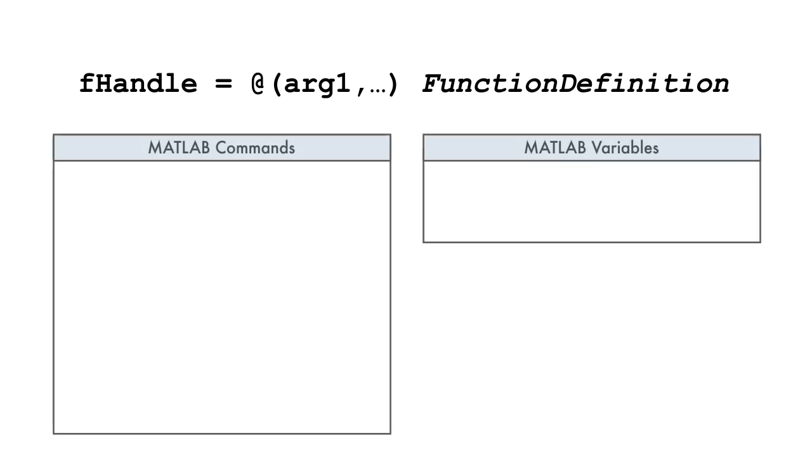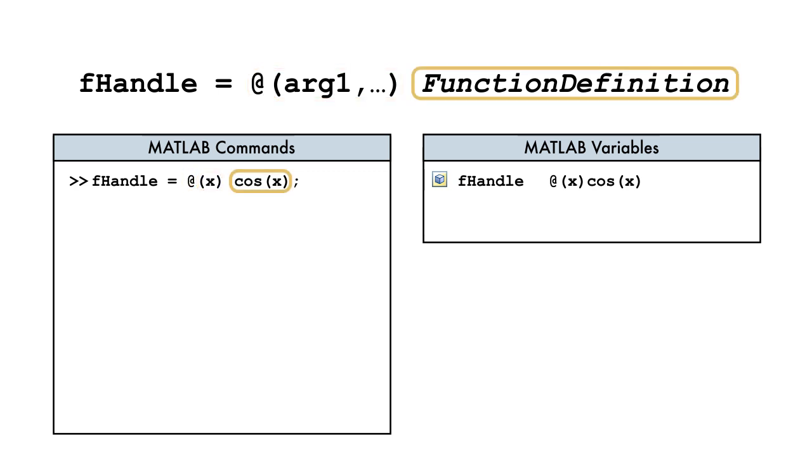Let's define a function handle representing the function cosine of x. First use the at symbol. Here x is the input variable. Finally, we define the function.